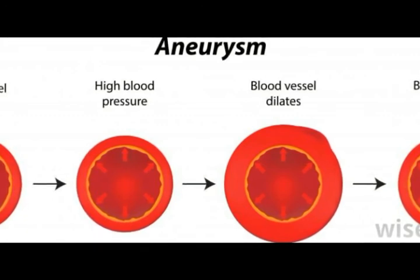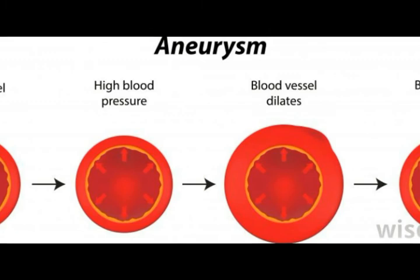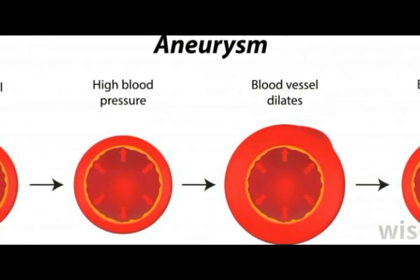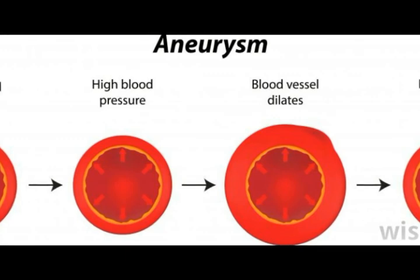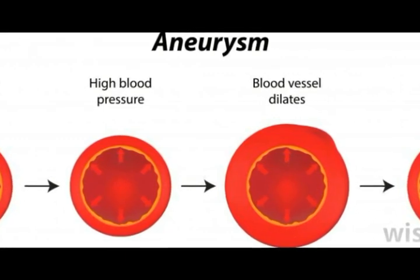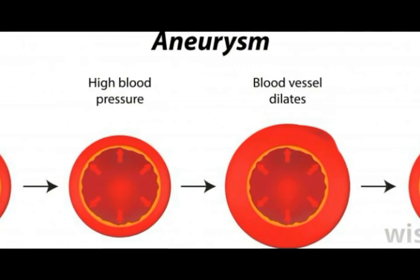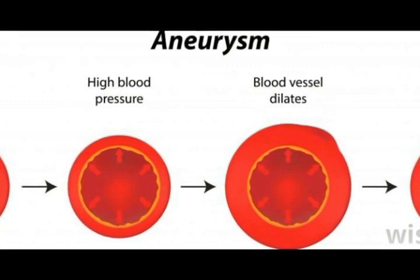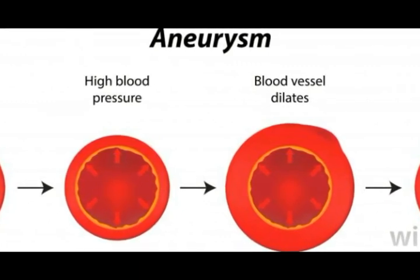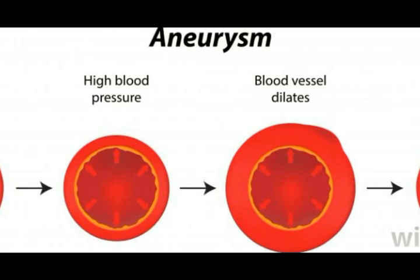Occasionally, problems can occur within the aortic sinus. One of these problems includes the possibility of a rupture, or an aneurysm, in the sinus. Possible causes of this type of aneurysm include infective endocarditis on the inner wall of the aorta, as well as tertiary stage syphilis.